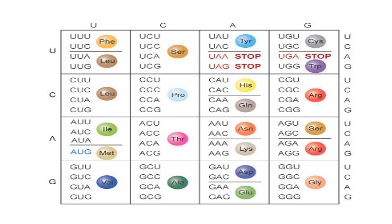Looking at the start codon: AUG codes for methionine and is usually the first codon that initiates translation. So when the mRNA has a triplet codon such as UAC, this will become AUG — methionine. There are also three stop codons: UAA, UAG, and UGA.